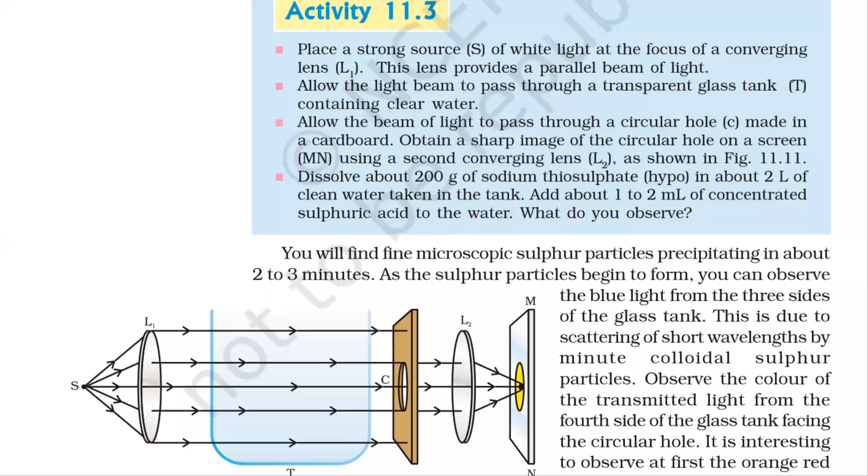Activity 11.3. Place a strong source of white light at the focus of a converging lens, which is a convex lens. This lens provides a parallel beam of light. The strong source of light comes here and because of the converging lens, a parallel beam of light is produced.